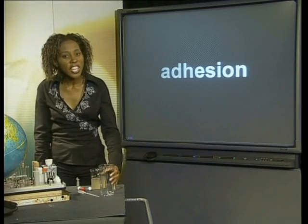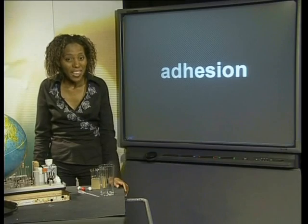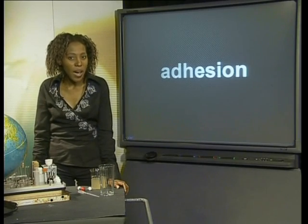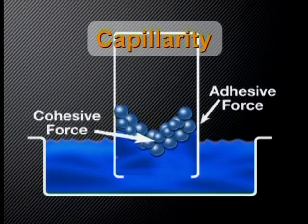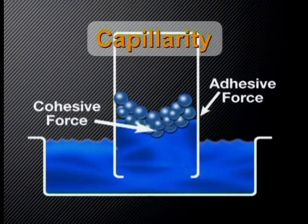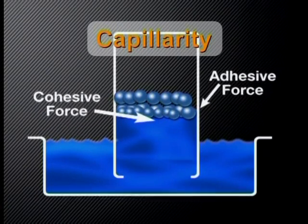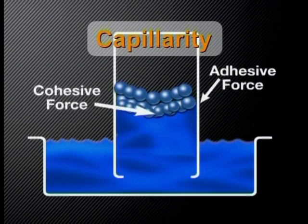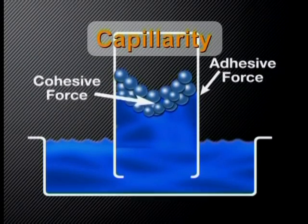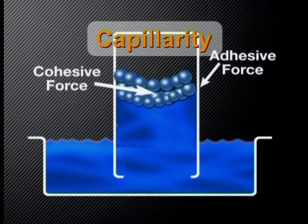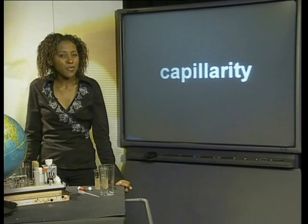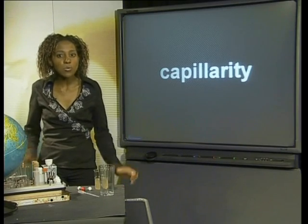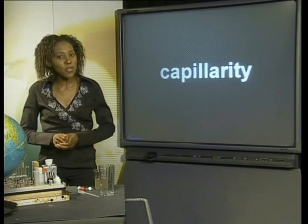Due to cohesion and adhesion, water is also able to move up tubes against gravity. The thinner the tube, the higher it can move up. This very special property of water is called capillarity. An animation shows how cohesion and adhesion assist in capillarity — because water adheres to the side of the tube, it moves up, and because the molecules also stick to each other, the molecules in the middle are pulled up as well. Capillarity is very important for plants because it enables water to move up the stem into the higher parts of the plant.